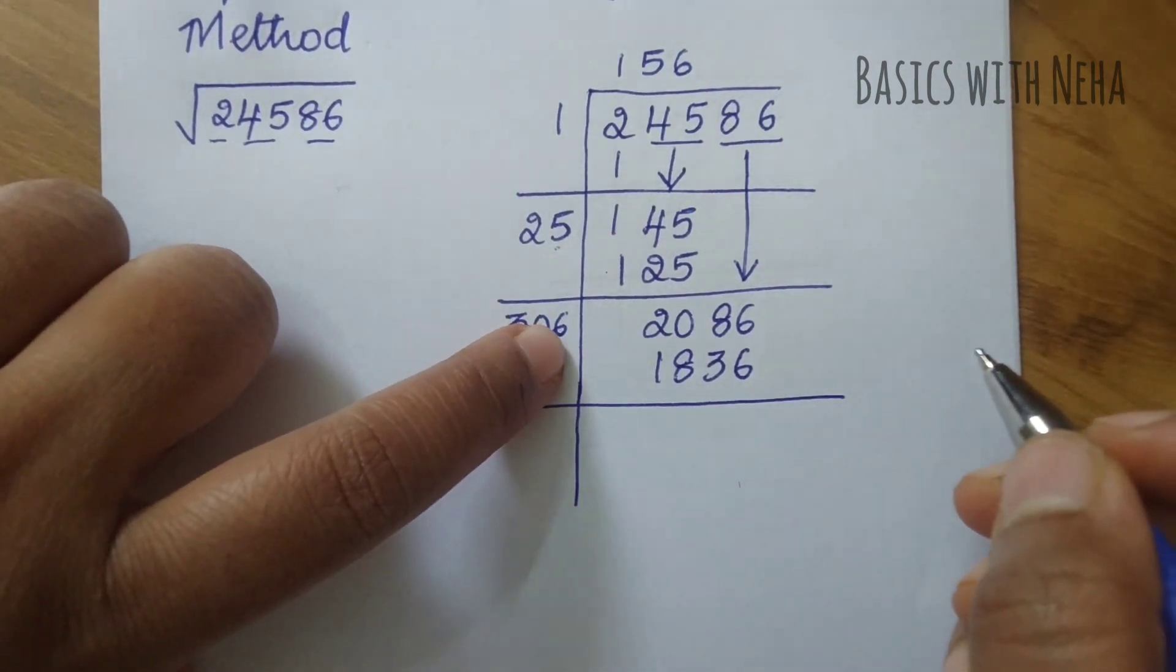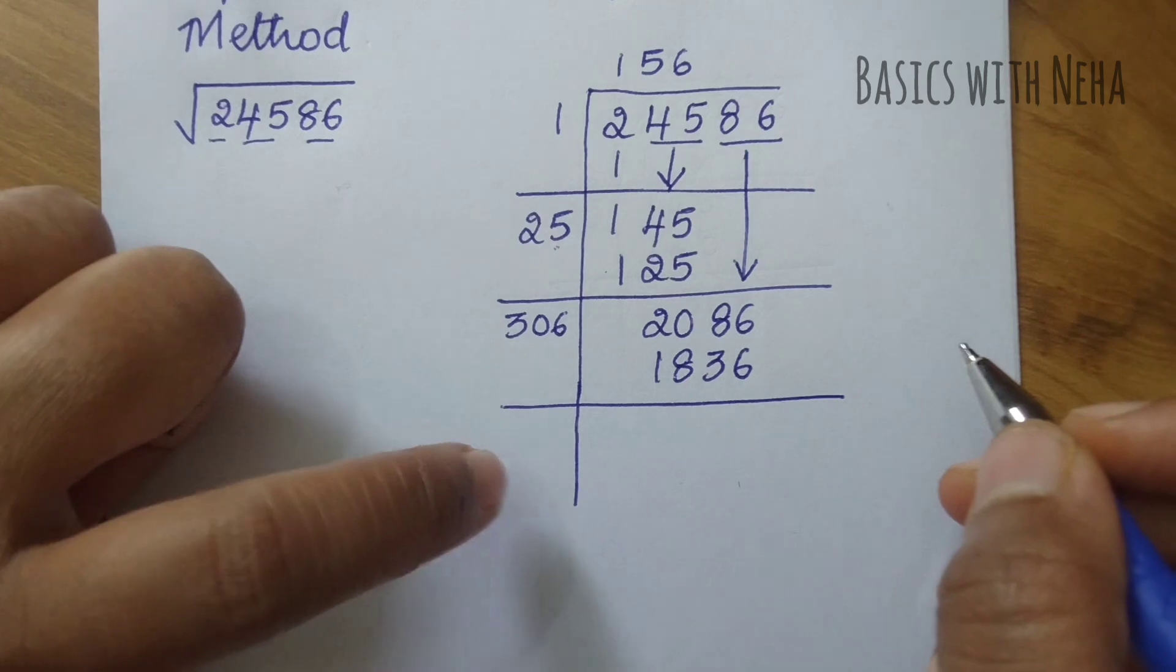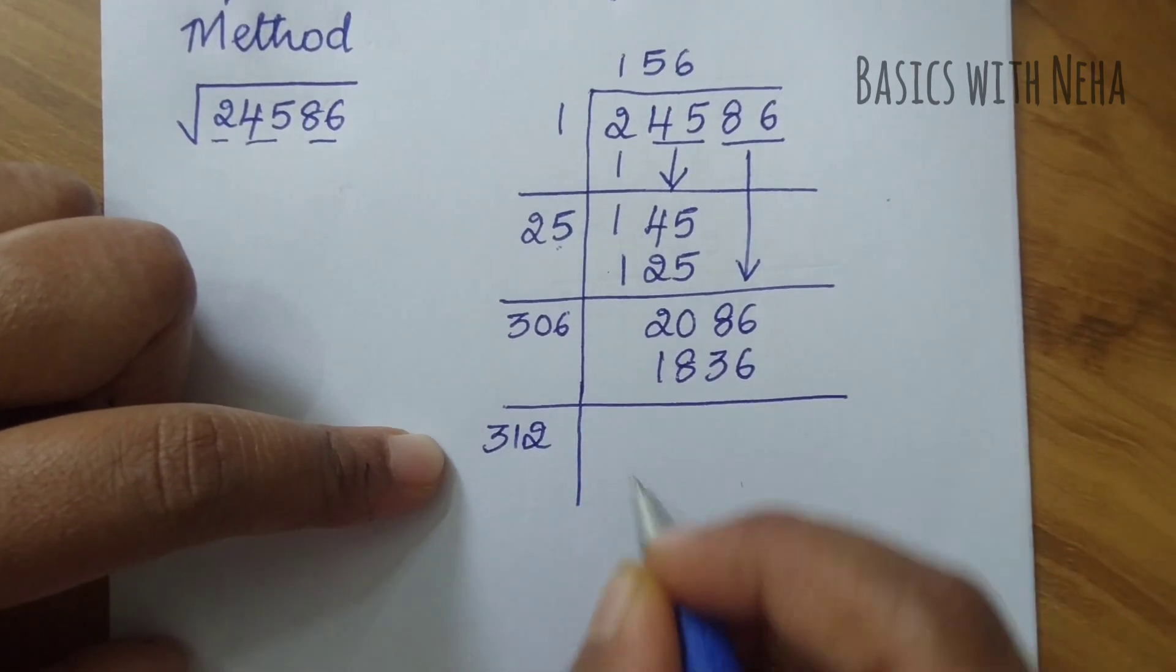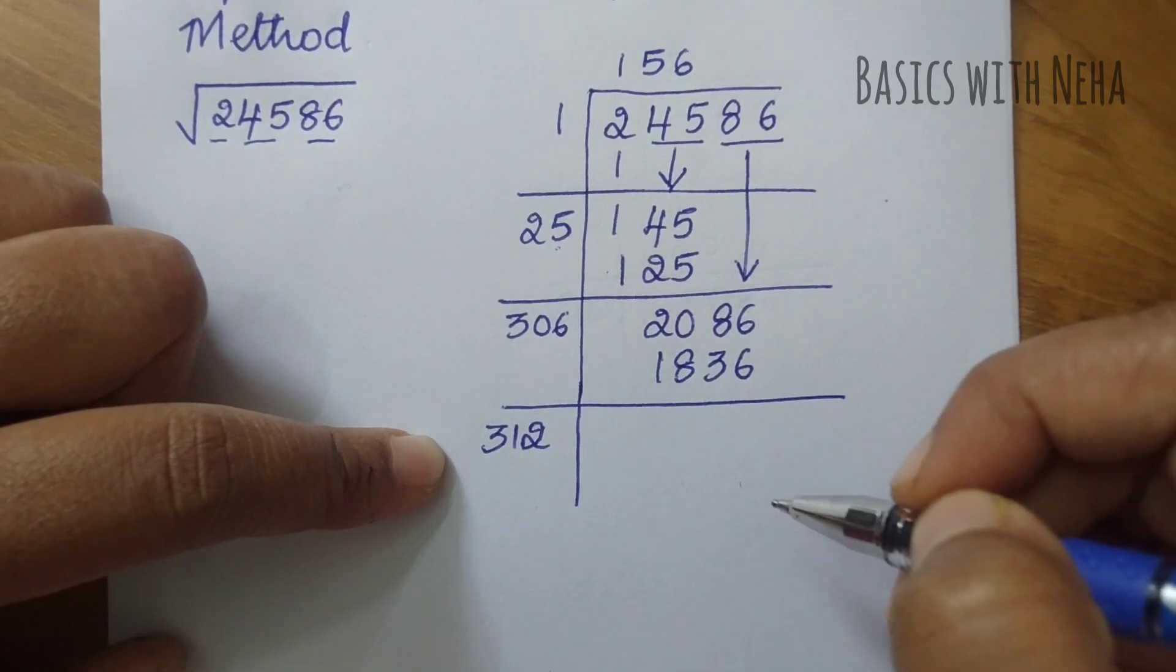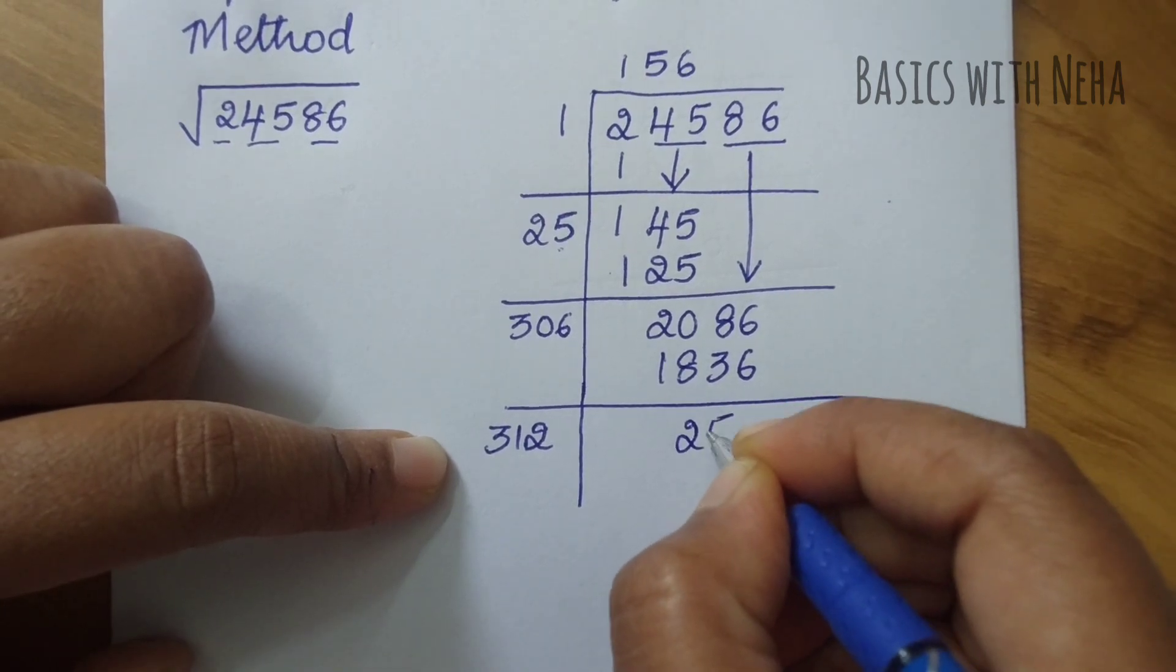The number I've taken is 6, so I have to add 6 to this, so it will be 312 in my next line. I have to minus 2086 minus 1836, so it will be 250.